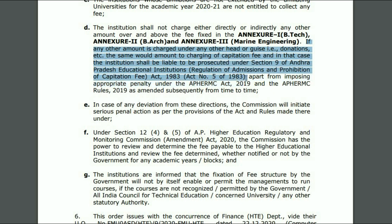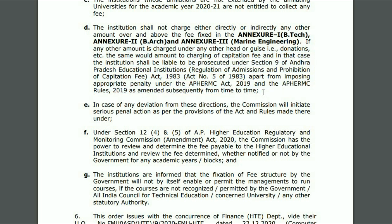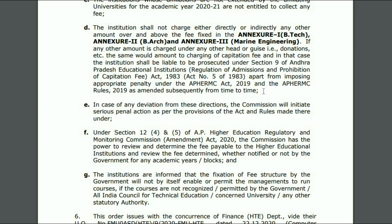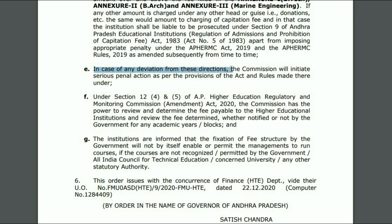Act number 5 of 1983, apart from imposing appropriate penalty under the AP HRMC Act 2019 and the AP HRMC Rules 2019, as amended subsequently from time to time. Whoever is violating the rule, legal action will be taken. In case of any deviation from these directions, the committee will initiate serious penal action as per the provisions of the Act and rules made thereunder.